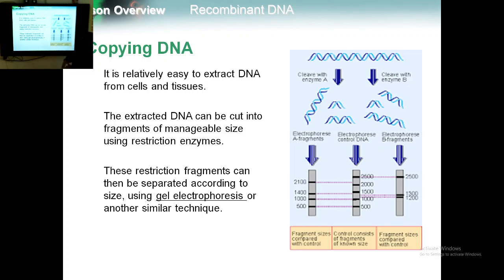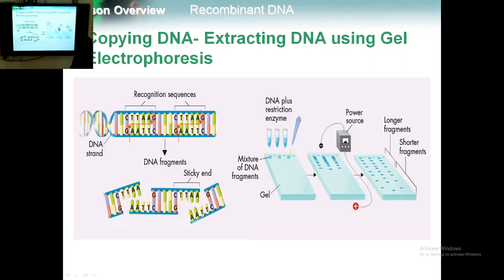The smaller fragments will migrate faster than the larger fragments — make sure you understand this. Smaller fragments migrate faster, so they will travel farther from the origin. This is how scientists work with DNA. The site where the DNA is cut is called the recognition sequence.